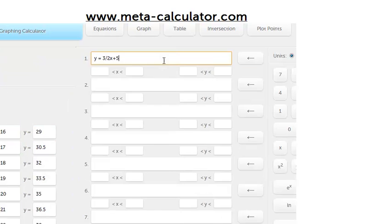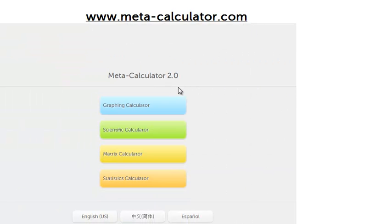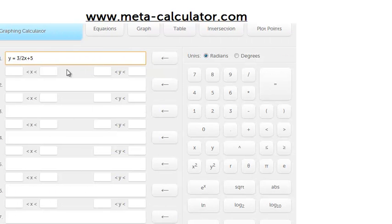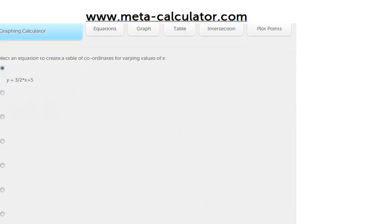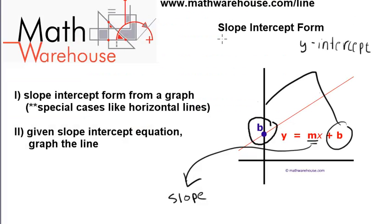So, again, this is a really cool free tool. Meta-calculator.com. You just click on the graphing calculator. And you can graph up to seven equations. You can even find the intersections of them. And do the table of values. That's it for the slope-intercept form of a line. If you want more tutorials on working with lines, go to www.mathawarehouse.com slash line. And you'll find lots of other goodies, including a free applet and other video tutorials. Thank you.